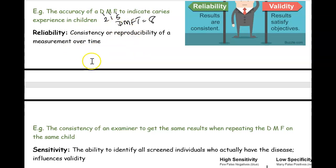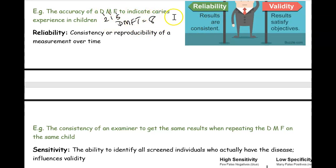If I do a DMFT score this semester, then again next semester and the semester after, and I always get the same results, that's high reliability. For example, if someone has a DMFT score of 8 and receives no treatment, and every time I assess them I still get a score of 8, I'm getting consistent results — that's high reliability.